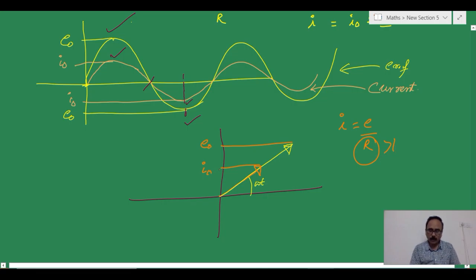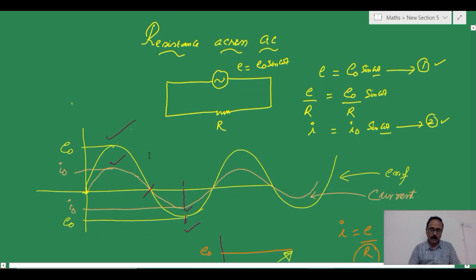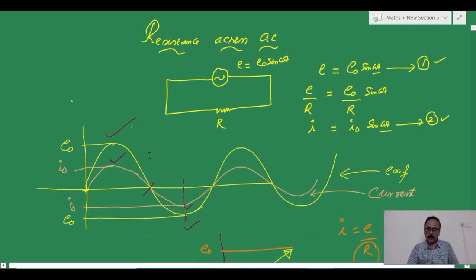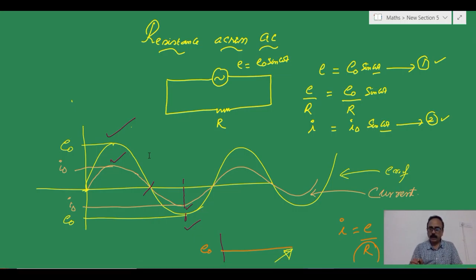It is by default taken I equals E by R. Of course, we are considering the value of R is greater than 1. If value of R is less than 1, then this current will be more than numerically the value of EMF. But we are considering R is greater than 1. Therefore, we are writing the peak of current as lower value and the peak of EMF as higher value.